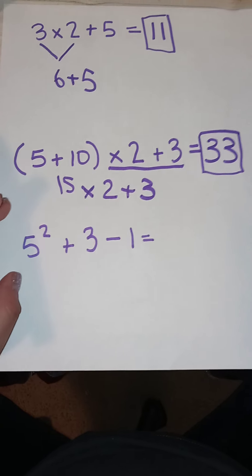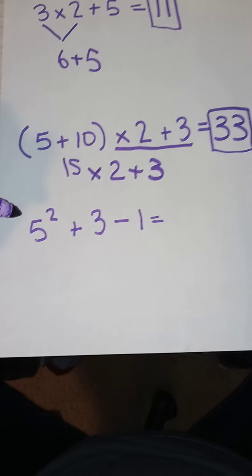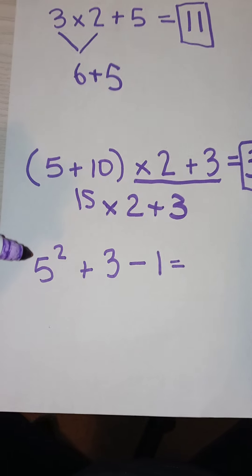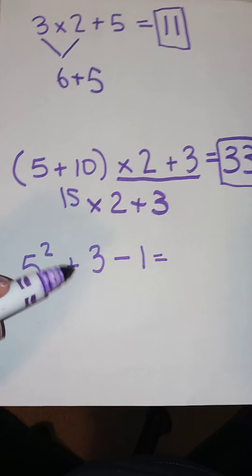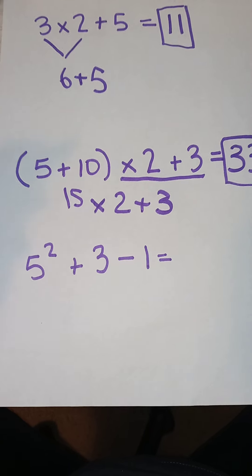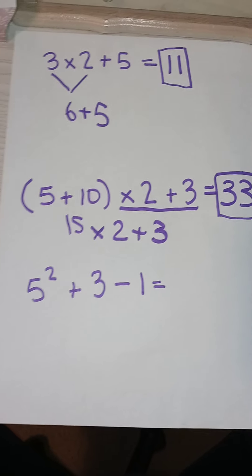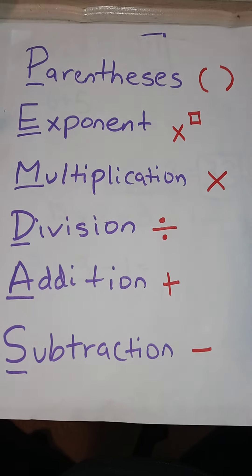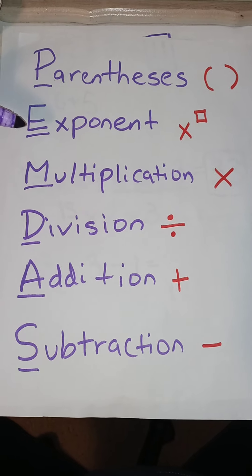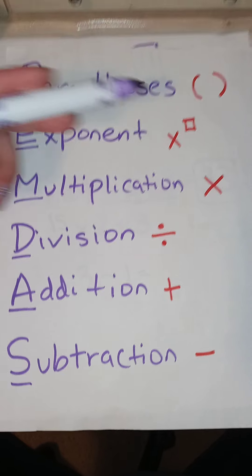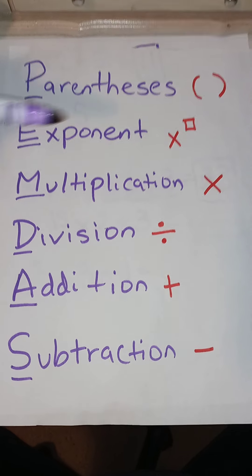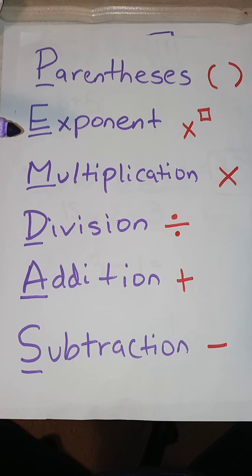Now, let's do the last problem. Here, we have an exponent. Five squared plus three minus one. Remember, exponent will come first in this equation. Since we don't have parentheses, we skip this and we go to the next one, which is exponent.